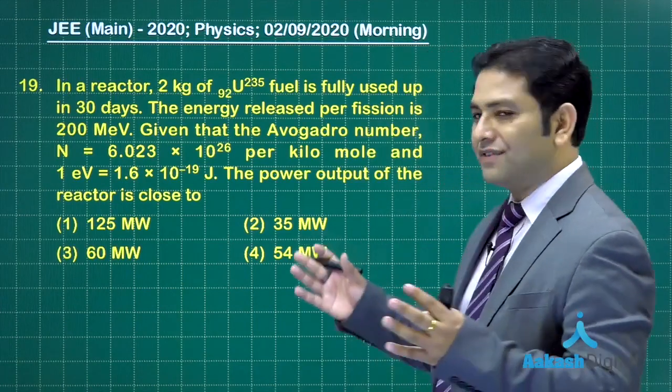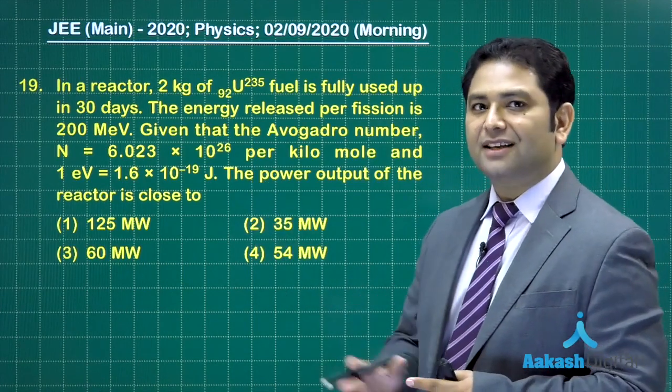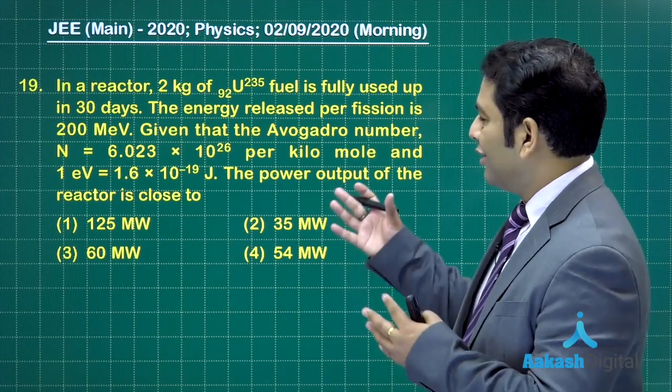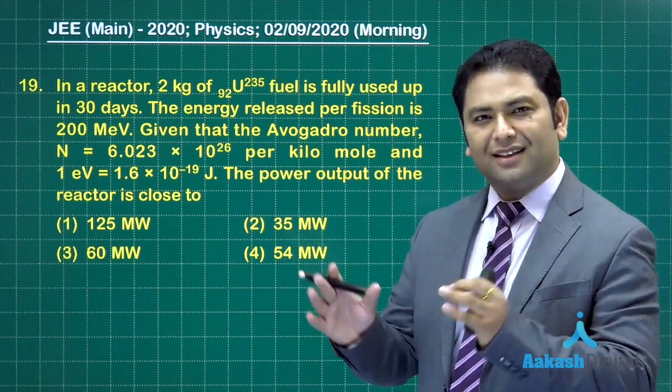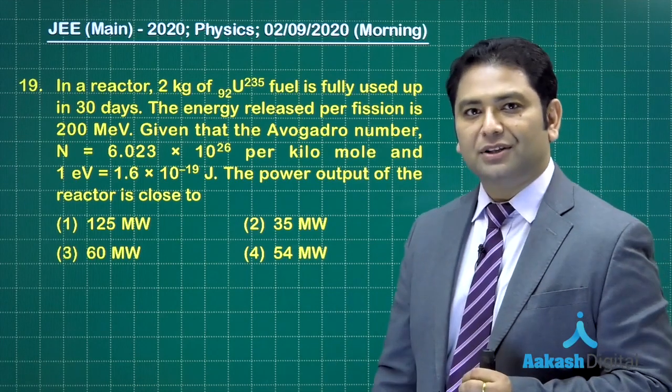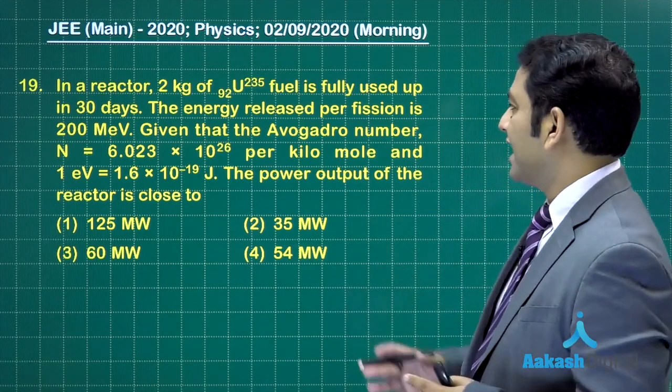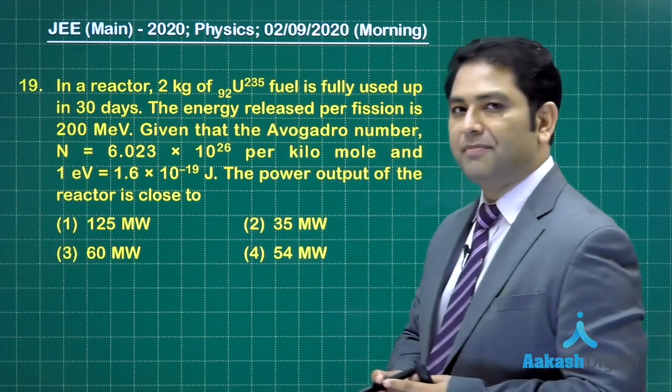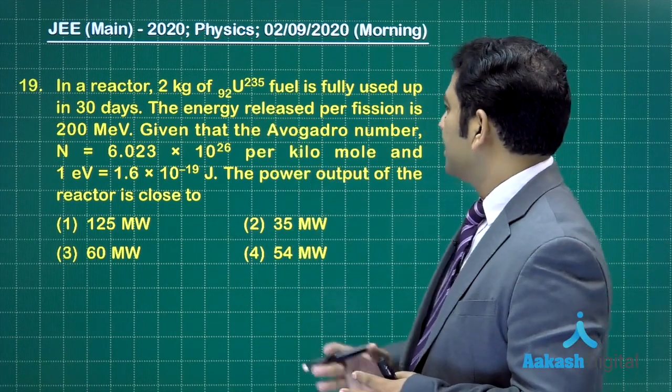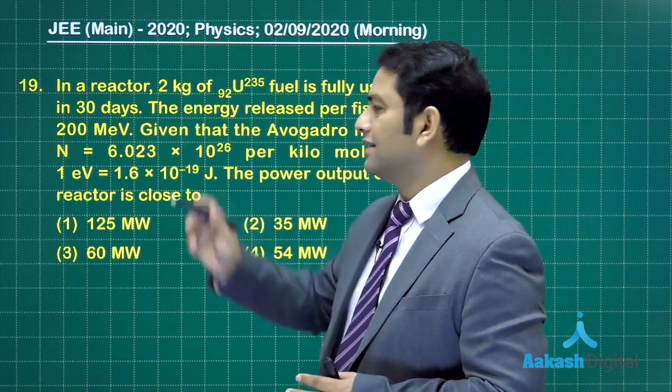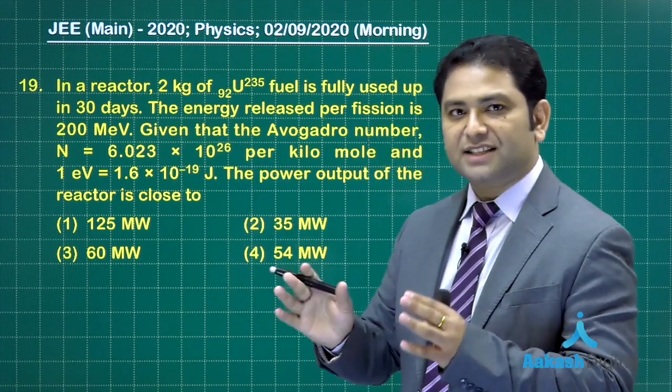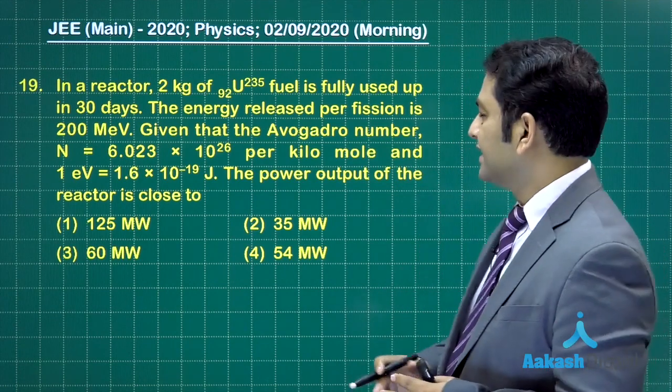This problem is from modern physics, basically nucleus. At a glance it seems like lots of complex equations, but it isn't. A little bit of calculation is required though. There is a reactor of uranium, and you can see this particular reactor uses 2 kg of fuel completely in 30 days.